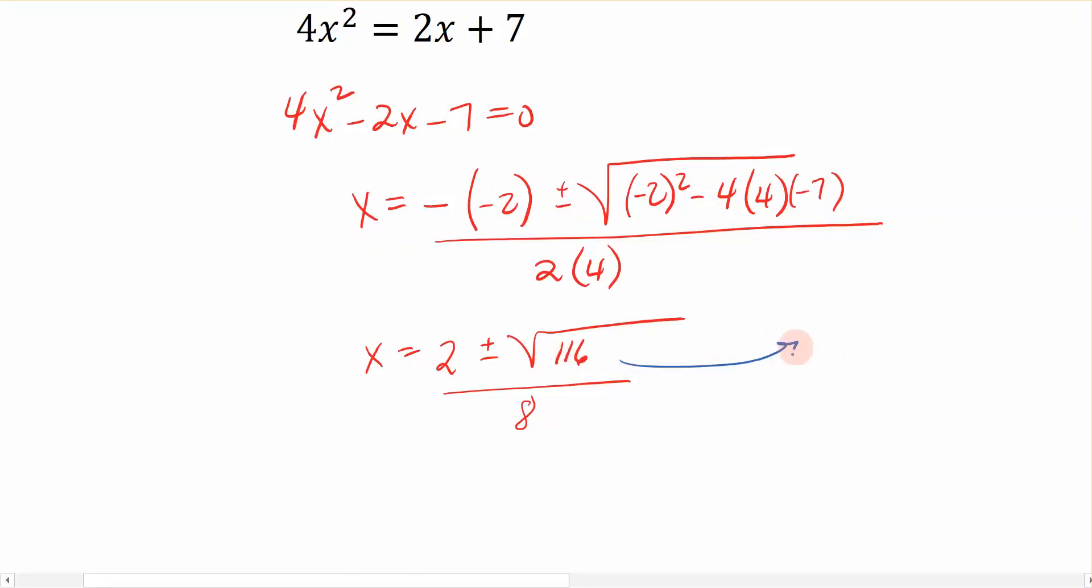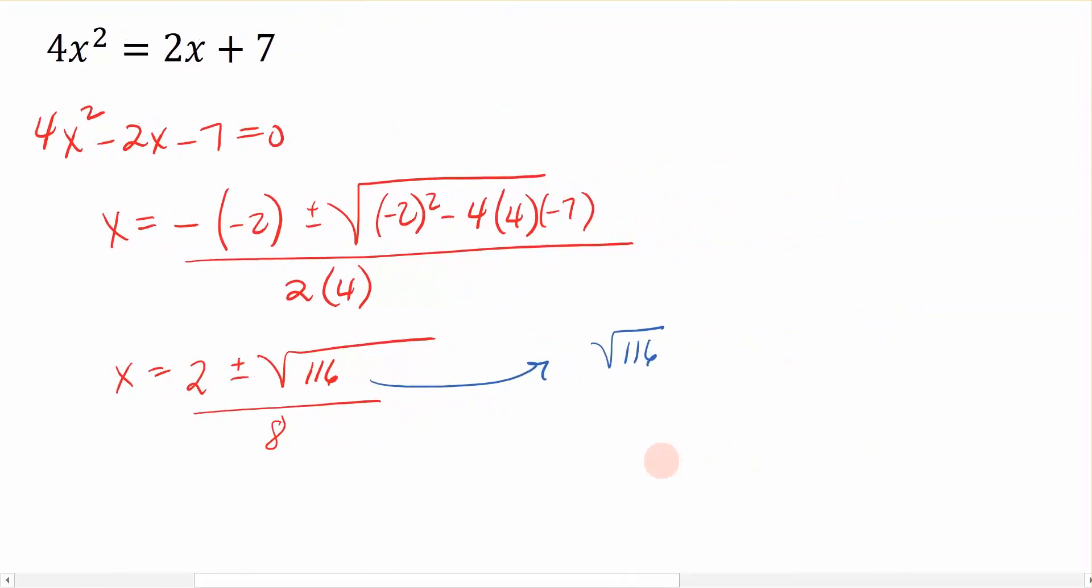Let's talk a little bit about how we simplify the square root of 116. Because I'm taking the square root of a number, I'm looking for perfect square factors of this number. And I can easily use my calculator to divide this number by perfect squares. The first perfect square you would choose is 4.